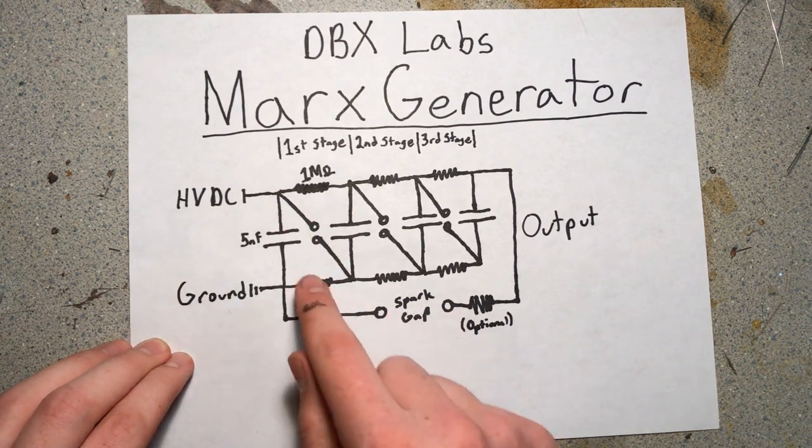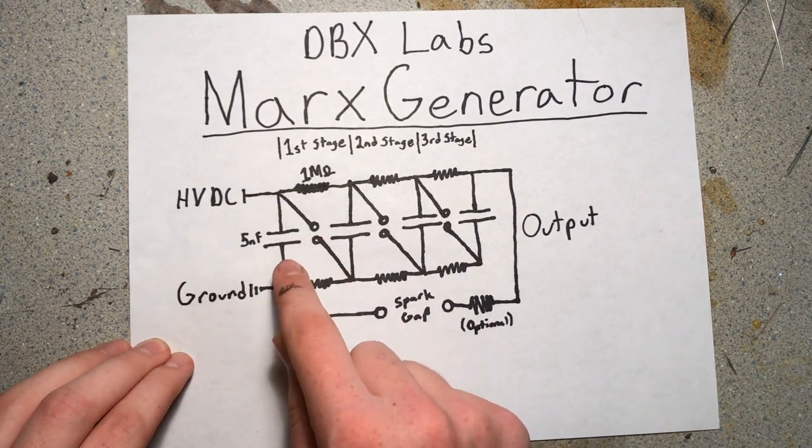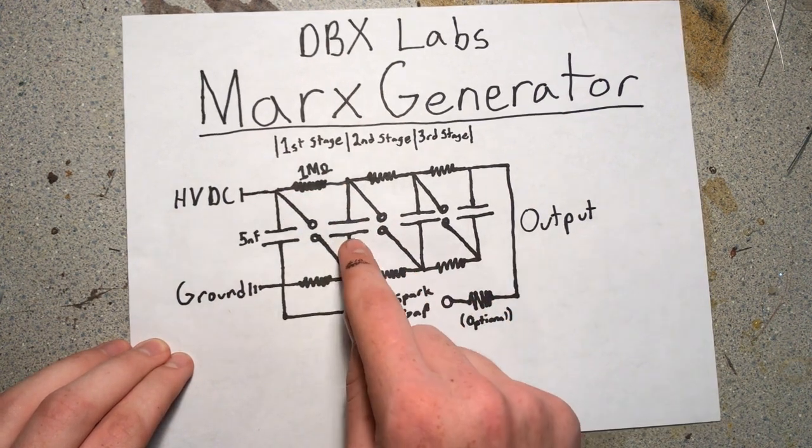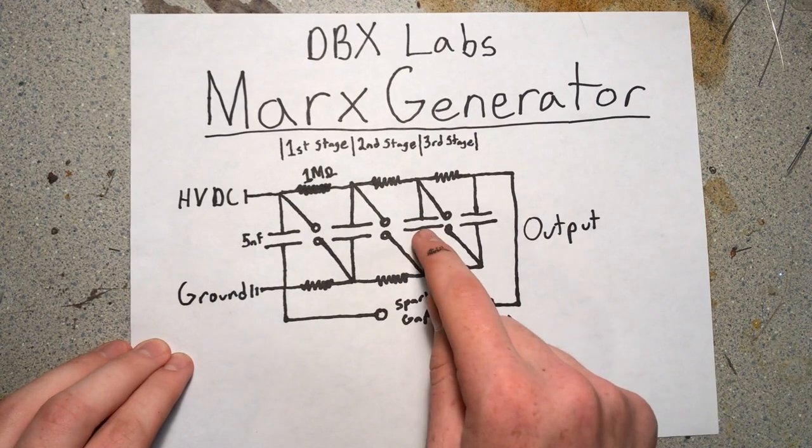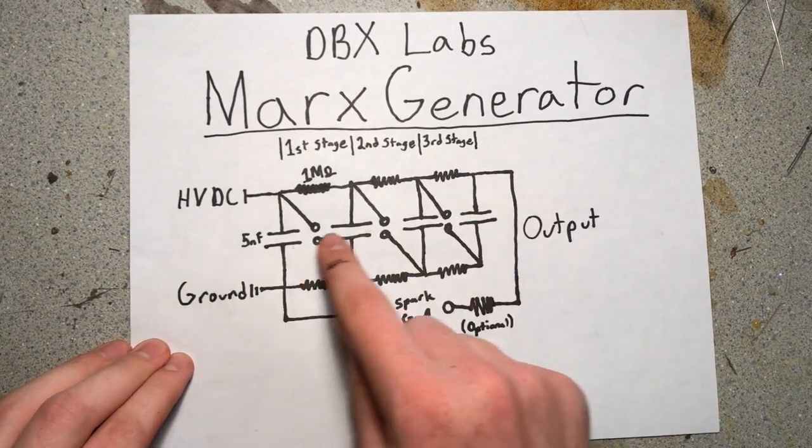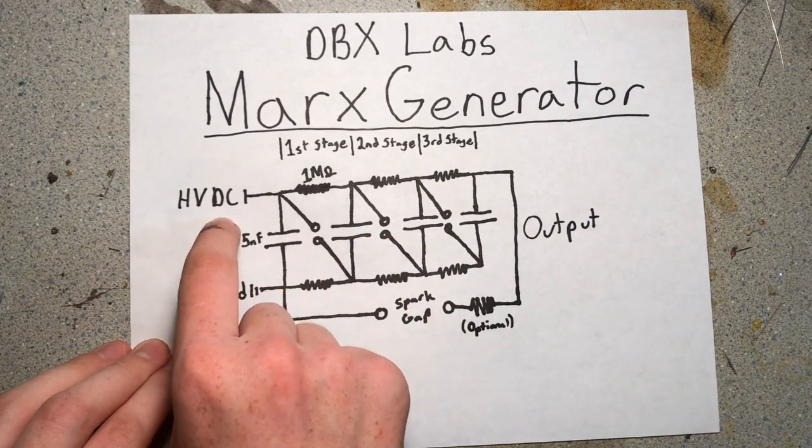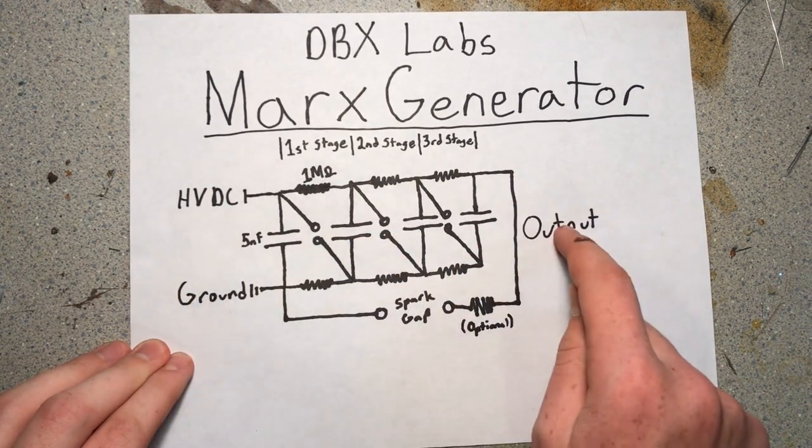Once they reach the voltage that will break down the air gap in the first spark gap, they will all fire because as soon as this spark gap breaks down, this voltage goes through here, combines with this voltage, goes through here, combines with that voltage, and so on until you have the cumulative four voltages added onto the input DC voltage, and that's your output.